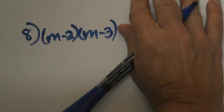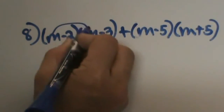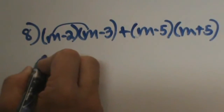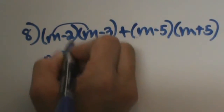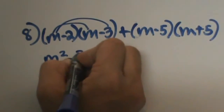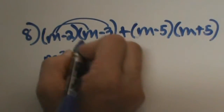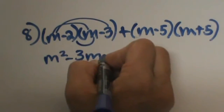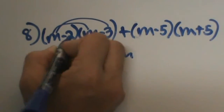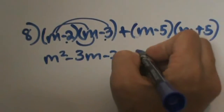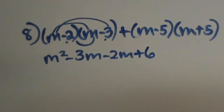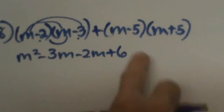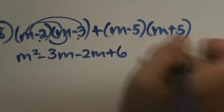Let's do the m minus 2 times m minus 3 first. FOILing it: I get m squared, outer is minus 3m, inner is minus 2m, and negative 2 times negative 3 is a positive 6. So there is my first result.